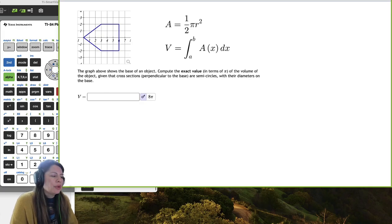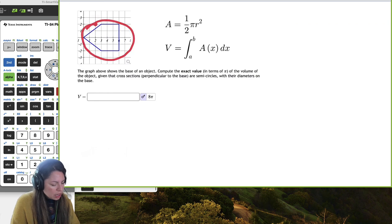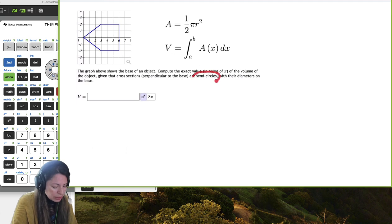Alright, so in this example, we're going to go ahead and use the graph given such that it's the base of an object, and we're going to find the volume using cross sections to be semicircles. So their diameters are on the base.